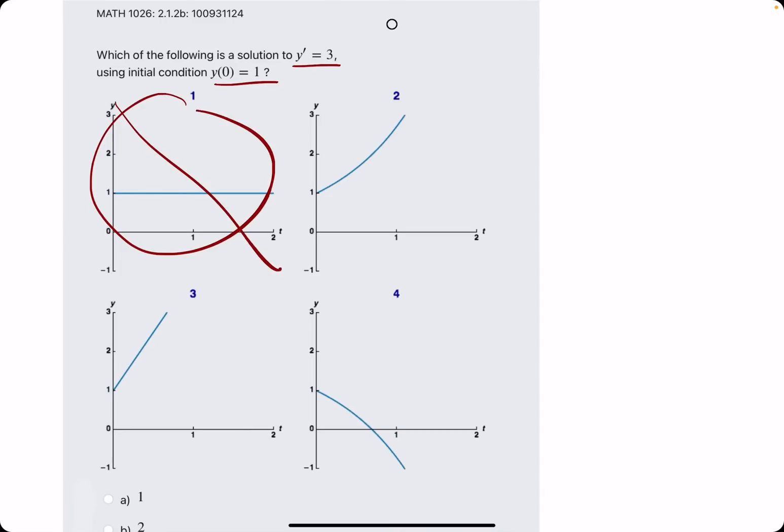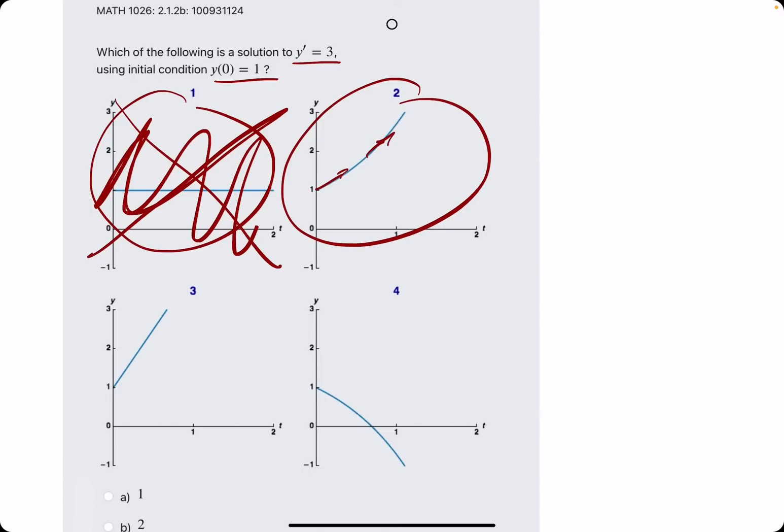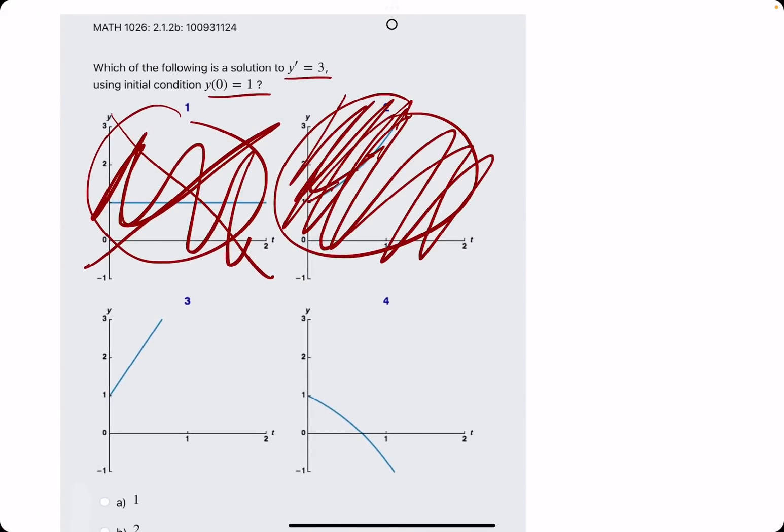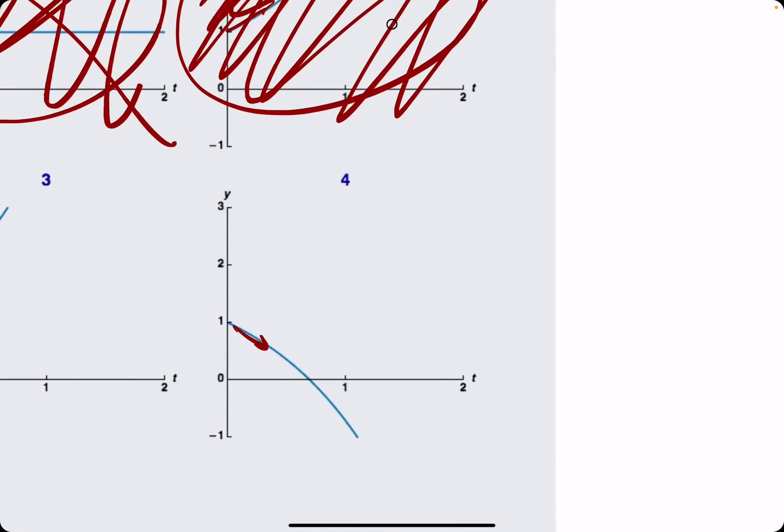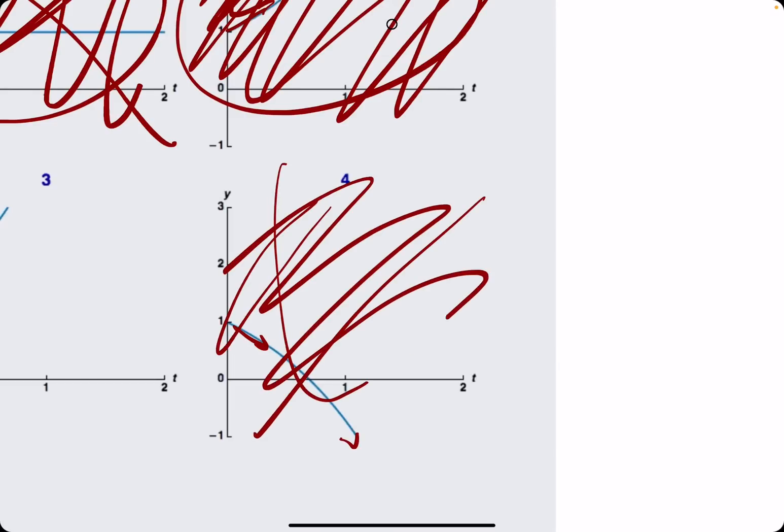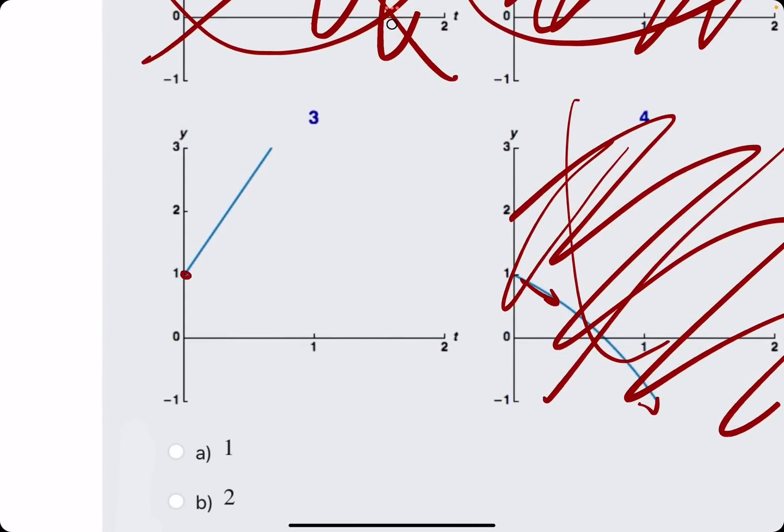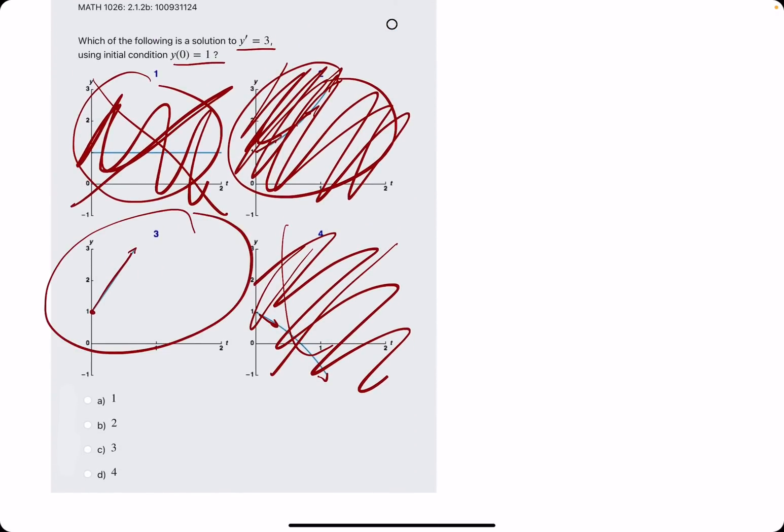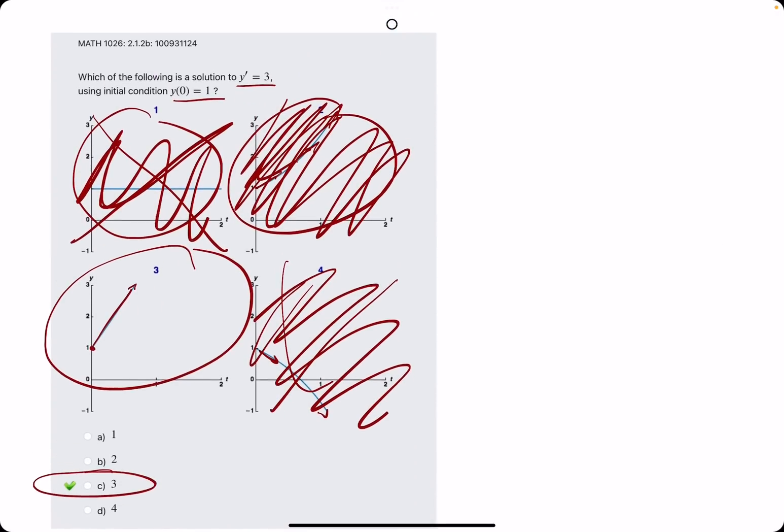1 has a slope of 0, so that's out of here. 2 might start with a slope of 3 because it starts positive, but it's changing constantly. So if y prime is meant to be 3 the whole time, but this one's changing, that's not a constant 3 the whole time. And then 4 starts off negative and stays negative the whole time. So 4 is off the table. So then option 3 is the only one that has a constant slope, and that is a fairly steep line representing a slope of 3 the entire time. So 3 is our best answer here.